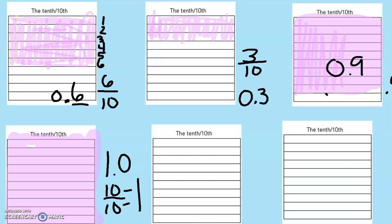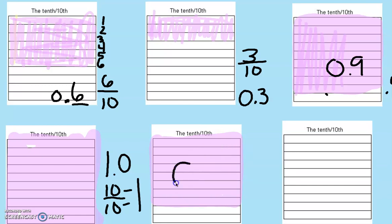Let's try one more. I'm going to shade in some rods and you tell me what the decimal would be. If you said 0.8, you are correct — it is eight tenths. Make sure you say the 'th': eight tenths.